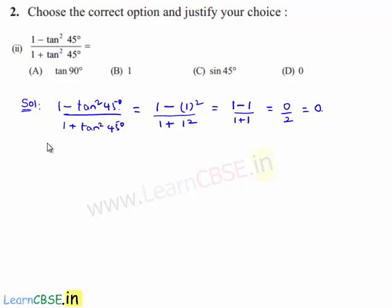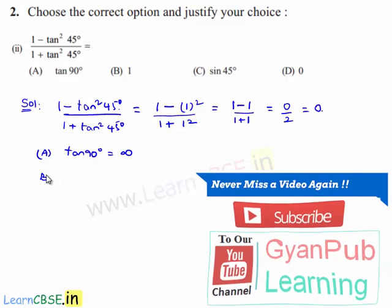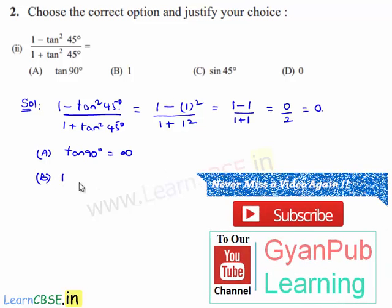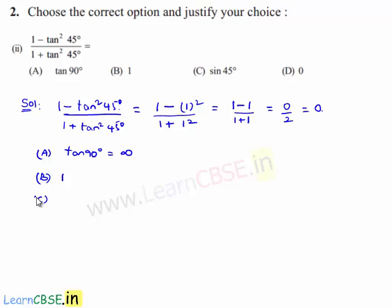Now let us verify from the options. Option A is tan 90, whose value is infinity, which is not equal to 0. Option B is 1, which is not 0. Option C is sin 45 degrees, whose value is 1 by root 2, which is not equal to 0. Option D is directly 0, which is the solution.